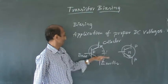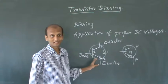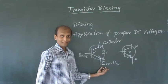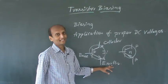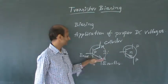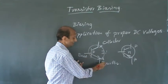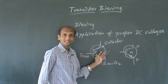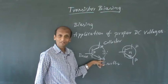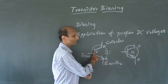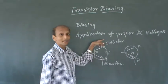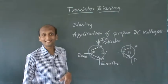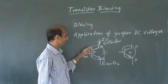We have studied these in our previous year. The emitter is the terminal which emits the charge carriers, the collector is the terminal which collects the charge carriers, and the base is the control terminal. In an NPN transistor, electrons move from emitter to collector, so collector current flows from collector to emitter. The collector current is called IC.